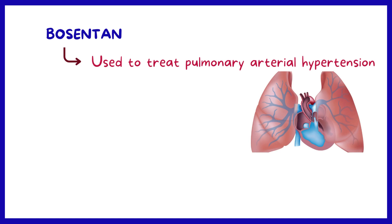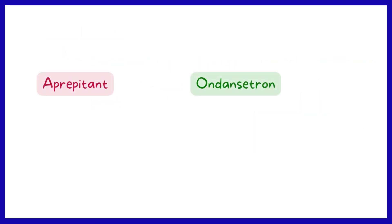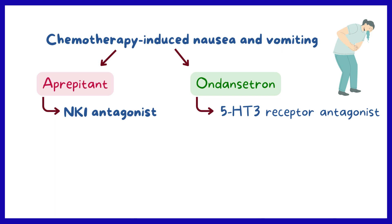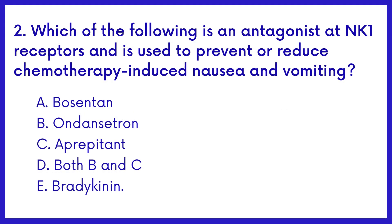Bosentan is used to treat pulmonary arterial hypertension in adults and children 3 years of age and older. Aprepitant and ondansetron are both used to reduce or prevent chemotherapy-induced nausea and vomiting. Ondansetron is an antagonist at 5-HT3 receptors. Aprepitant is classified as an NK1 antagonist because it blocks signals given off by NK1 receptors, thereby decreasing the likelihood of vomiting in patients. Therefore, the answer is option C.